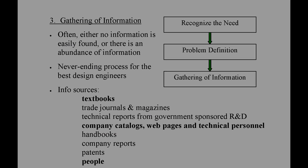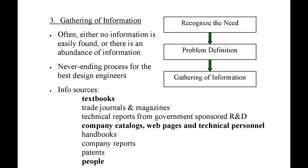The third step in the design process is information gathering, also known as background research. There is often either no information easily found or an abundance of information on the topics of interest. Background research is a never-ending process for the best design engineers because they're constantly surveying their environment, adding to the mental database of ideas they have to pull from on their next design project.